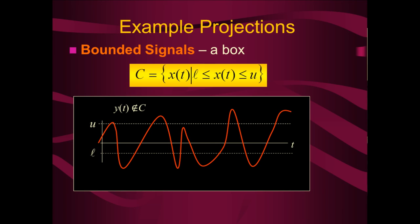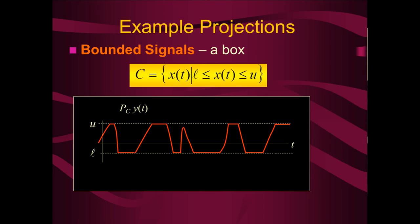To extend this to higher dimensions for a bounded signal convex set where x(t) must be limited between lower value l and upper value U: we simply clip the signal. We take everything greater than the upper bound and set it to the upper bound; anything smaller than the lower bound, we set it to the lower bound. We get the clipped signal, which is obviously in the convex set. This is determined very intuitively simply by the act of clipping. In higher dimensional space, this corresponds to projecting onto a hyperbox.